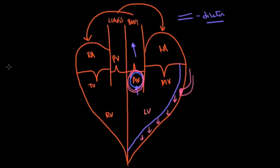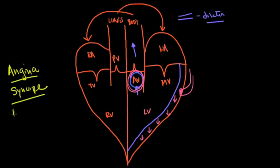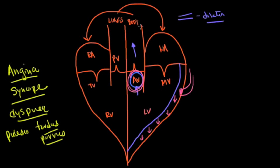As a result, you get symptoms such as angina, which is chest pain. You also get syncope, where you basically pass out, and dyspnea — shortness of breath. A physical sign is pulsus parvus et tardus — meaning the pulse has a slower and later upstroke when the blood finally gets through the stenotic aortic valve into the peripheral vasculature.